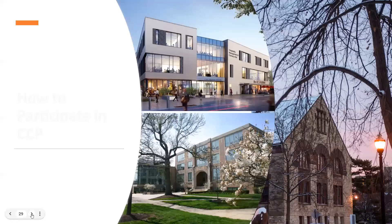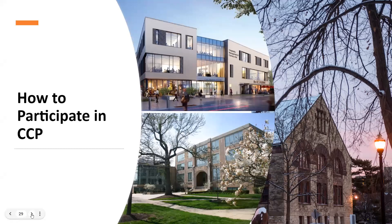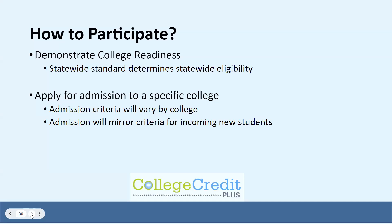Now that you've heard about the CCP program, it's time to tell you how to participate. There are several steps that you need to take to participate in CCP. The state of Ohio has set eligibility criteria that will allow students to participate in the program. However, admission to specific colleges will depend on that college's admission criteria. Students will need to be admitted to the college of their choice. The admissions process will be very similar to applying to college after high school, so you'll need to work directly with each college to learn their admission requirements.